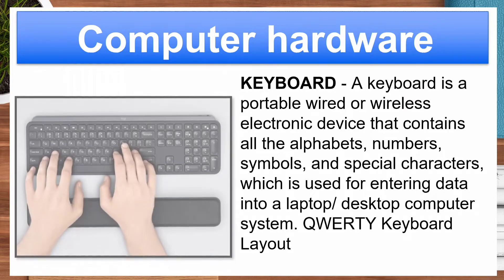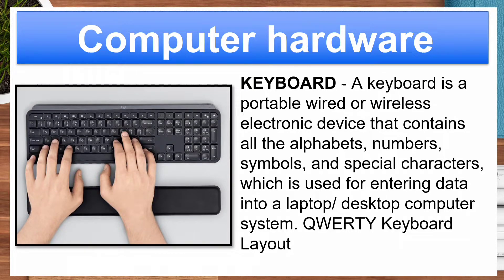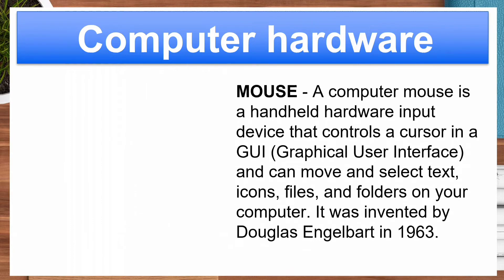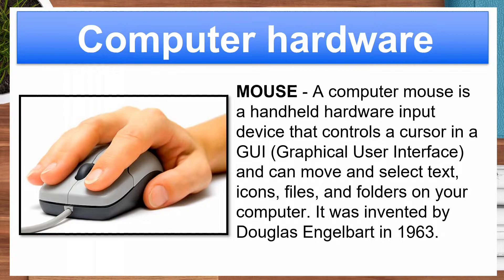Keyboard. A keyboard is a portable wired or wireless electronic device that contains all the alphabets, numbers, symbols, and special characters, used for entering data into a laptop or desktop computer system, typically using a QWERTY keyboard layout. Mouse. A computer mouse is a handheld hardware input device that controls a cursor in a GUI, or graphical user interface, and can move and select text, icons, files, and folders on your computer. It was invented by Douglas Engelbart in 1963.